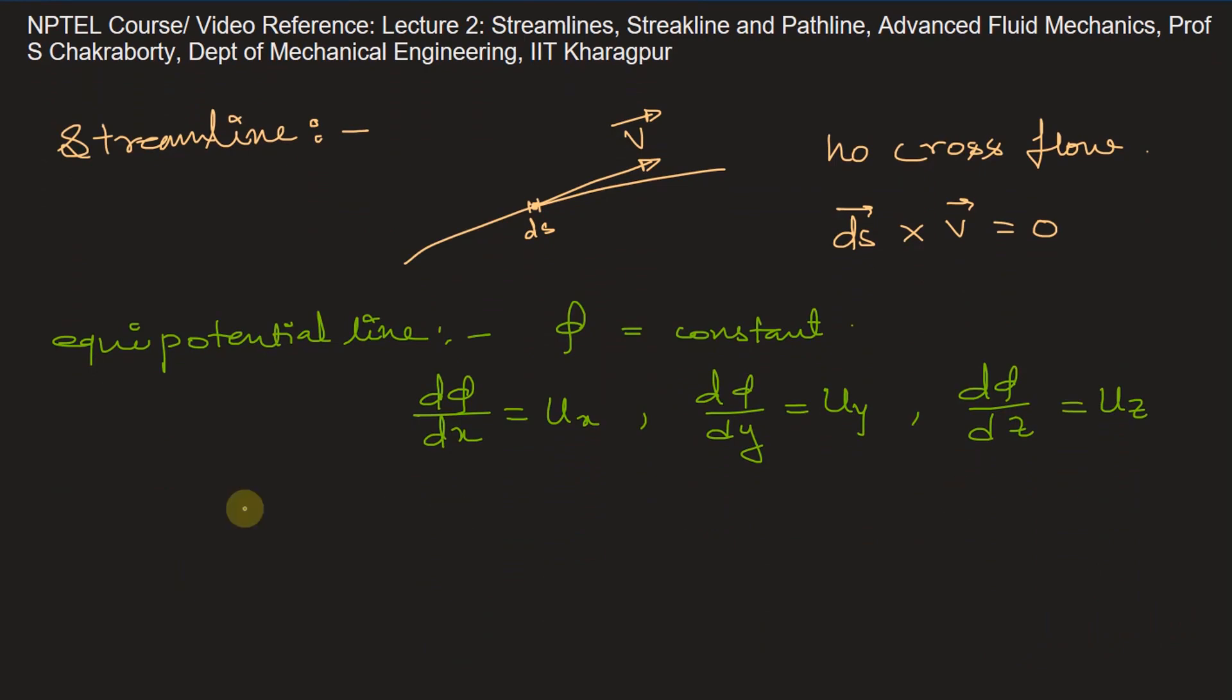Stream function is represented by psi, and potential function is represented by phi. Wherever the stream function dpsi is zero, that line is called a streamline. Wherever dphi is zero, that is an equipotential line.